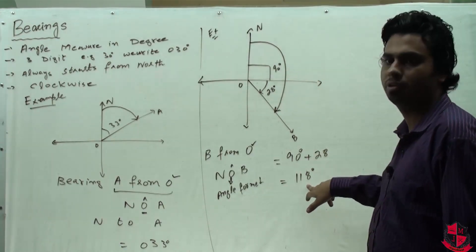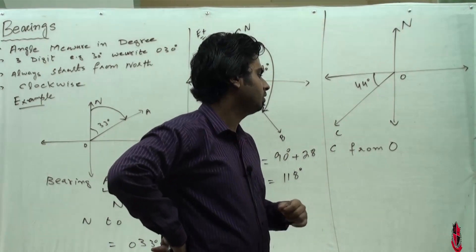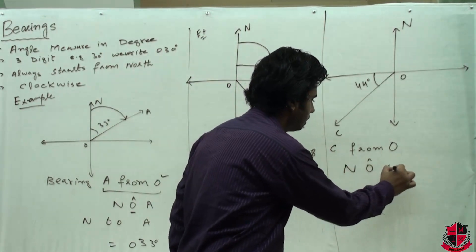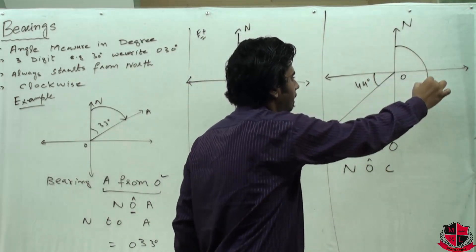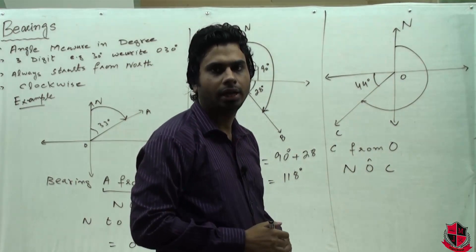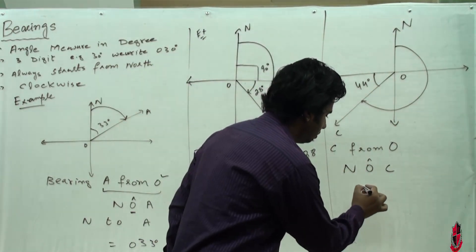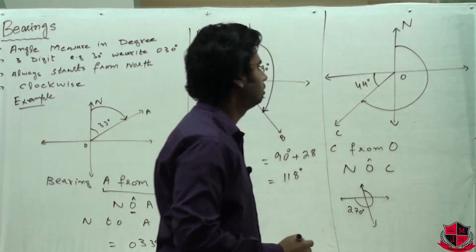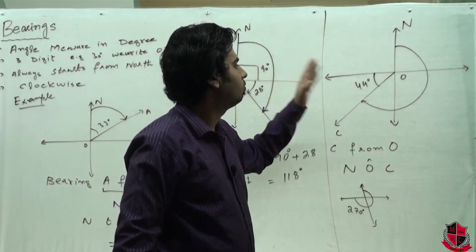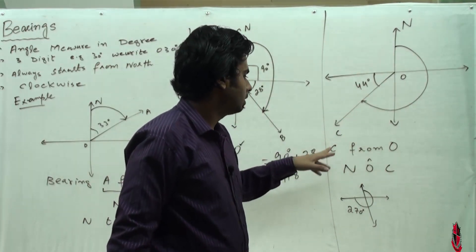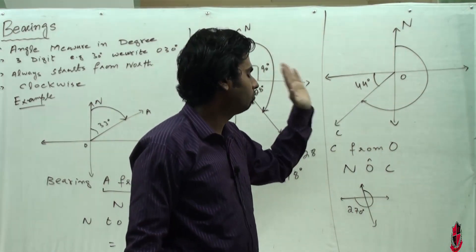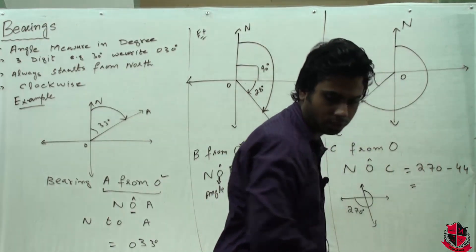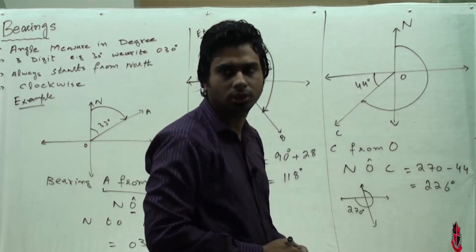Let's look at another example. We need to find bearing C from O. Bearing C from O means angle NOC. We start from N and end at C. One thing we know is that in the Cartesian plane, going clockwise to the south is 270 degrees. It's clear from this picture that if we subtract 44 from 270, we get our bearing of C from O. 270 minus 44 equals 226 degrees. So bearing C from O is 226 degrees.